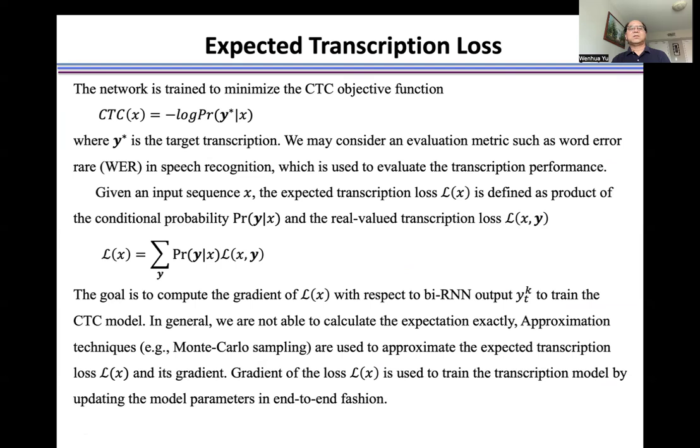Given input sequence X, the expected transcription loss L(x) is defined as a product of the conditional probability Pr(y|x) under the real valued transcription loss L(x, y). The goal is to compute the gradient of L(x) with respect to bidirectional RNN output.